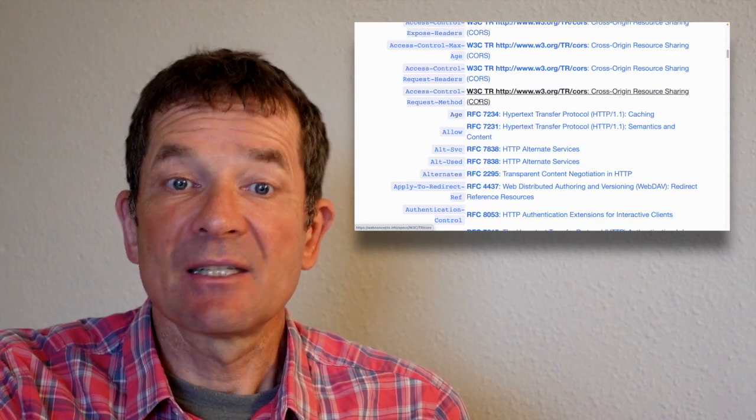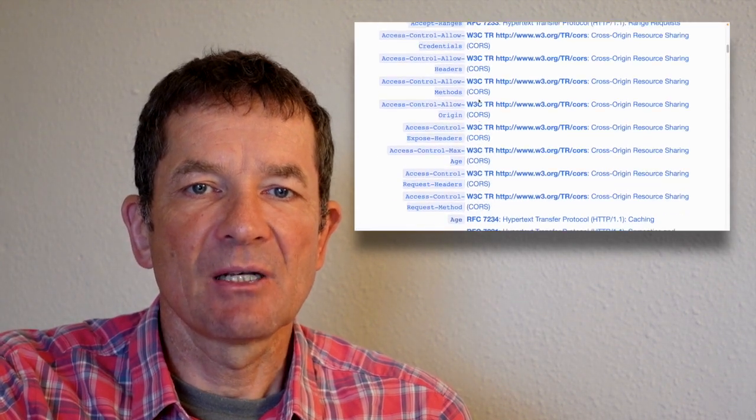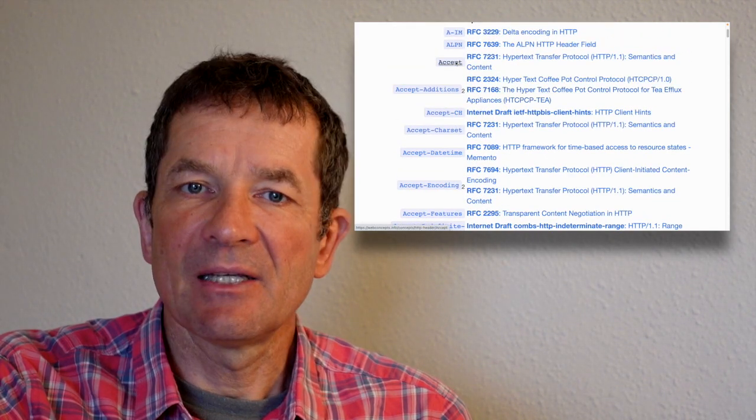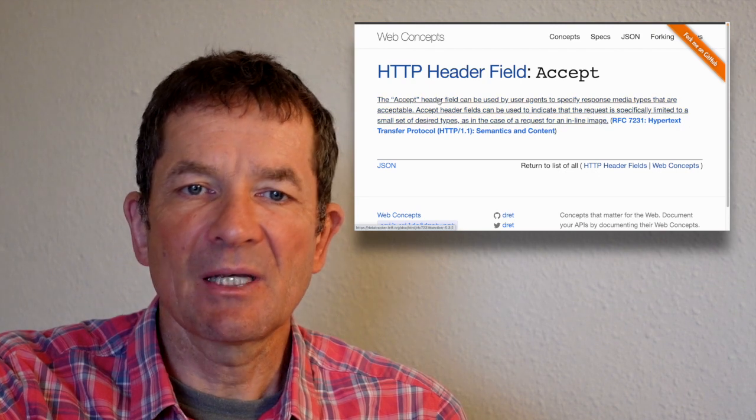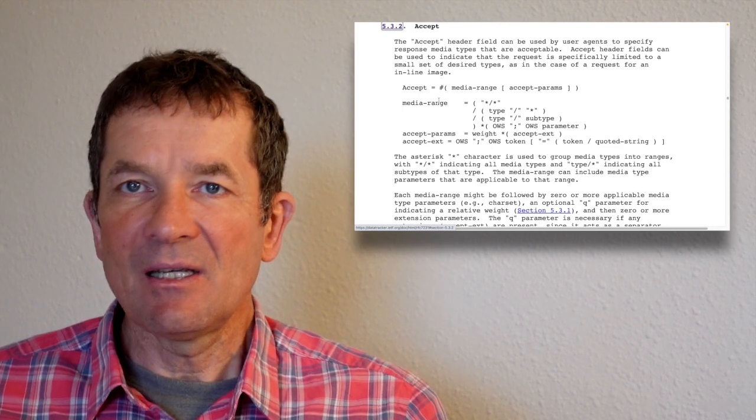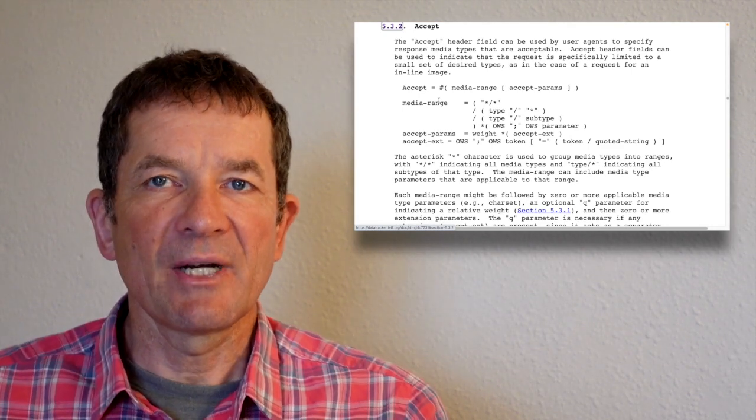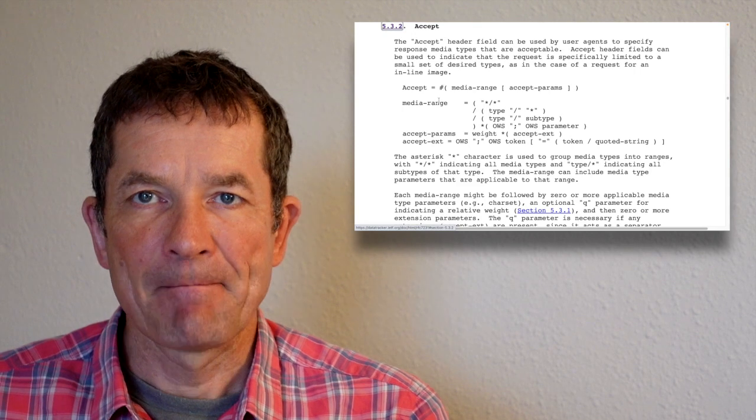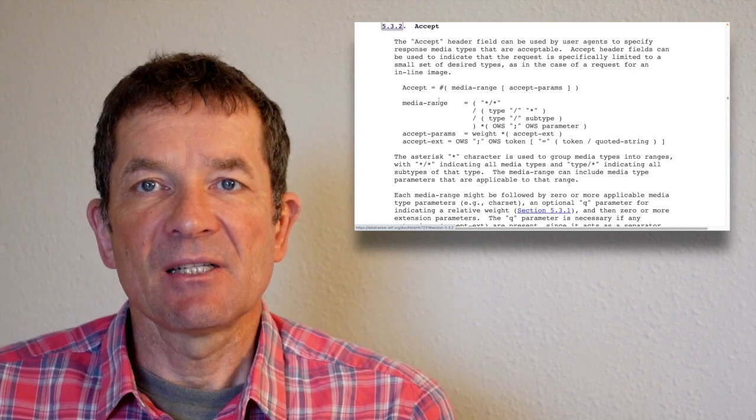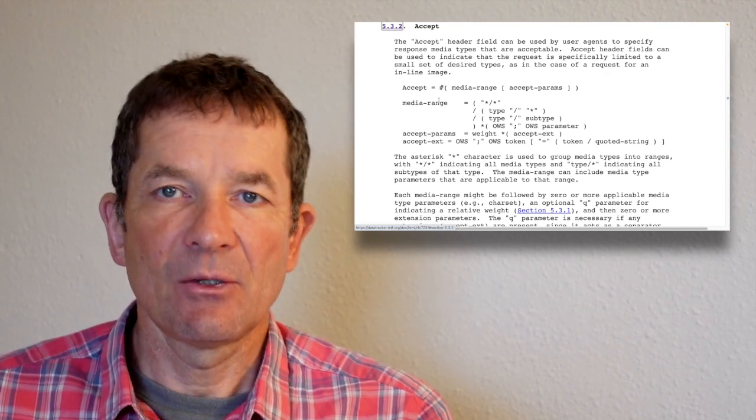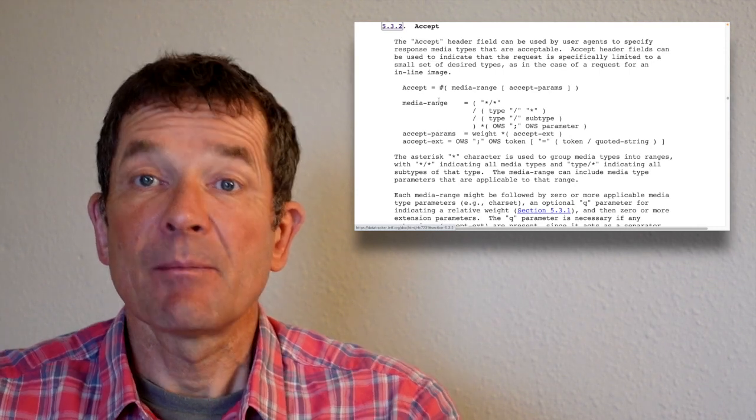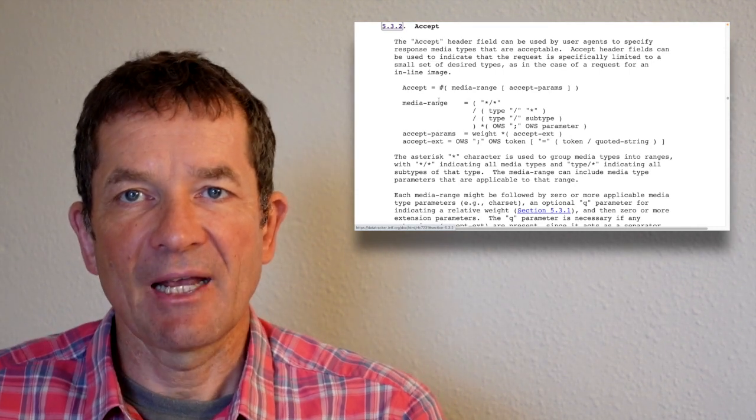But now let's look at a different header field, and for this we can look at the accept header field, and the accept header field is quite a bit more complicated. So when we look at the accept header field and the definition of the accept header field, you can see that the accept header field already is defined in a more complex way. And there are many different HTTP header fields that are defined like this. They are defined in a way that is structured and that is something that you need to work with if you want to use that header field.